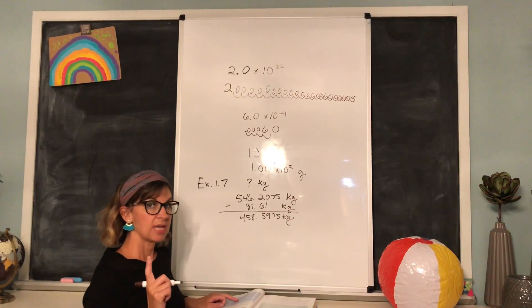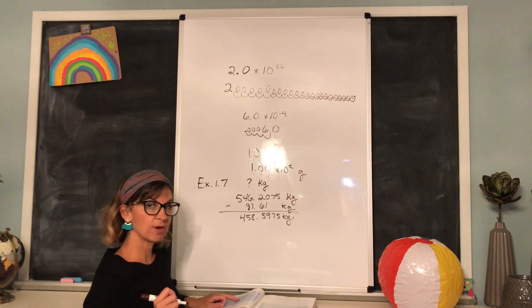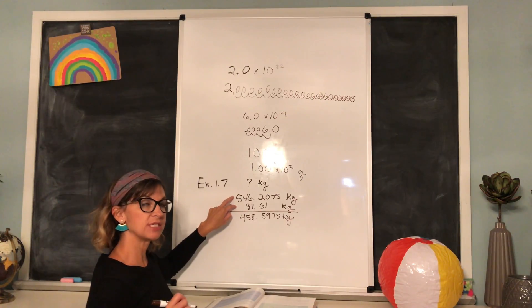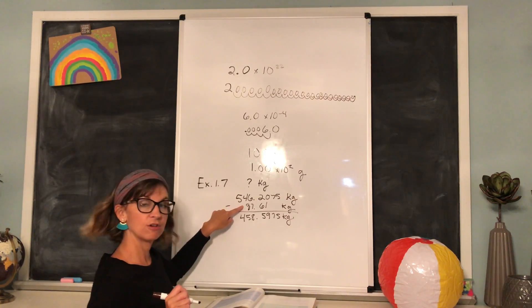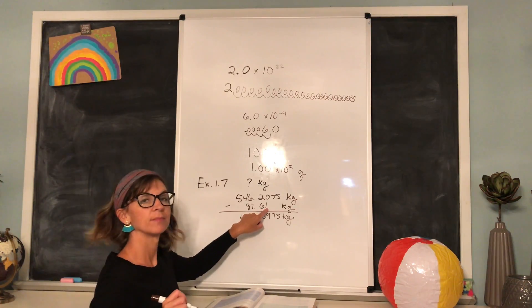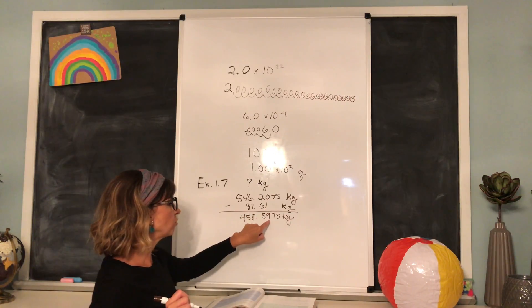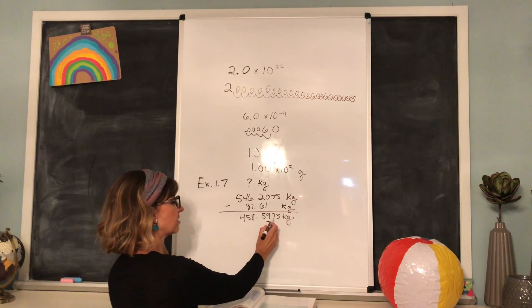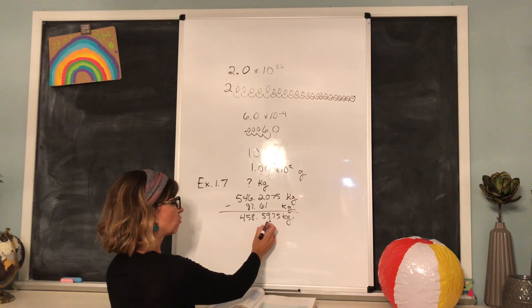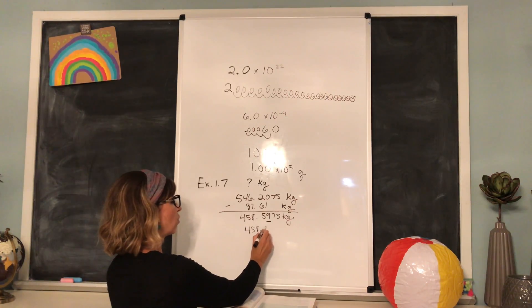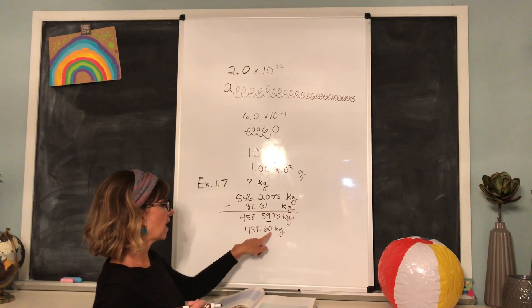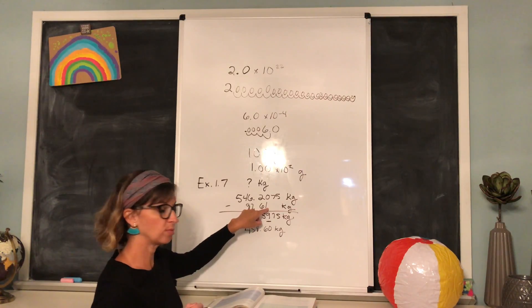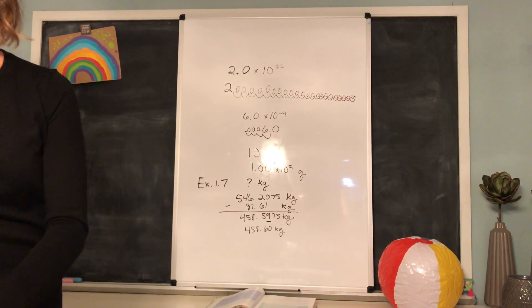I trust that you guys know how to do that problem, but now we have to make sure that we have the correct number of significant figures. If you remember, when adding or subtracting with significant figures, you look to the given measurement that is the least precise. This is for adding and subtracting with significant figures. This second one here is the least precise because it only measures to the 100th decimal place. So our answer has to only be that precise as well. Our answer needs to end in the 100th decimal place. So as you can see, because the 7 here is above 5, we need to round up. So our answer would actually be 458.60 kilograms. Our answer would end in the 100th decimal place because this measurement was the least precise and only measured to the 100th decimal place.